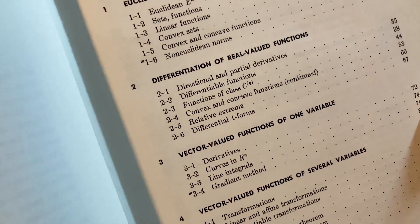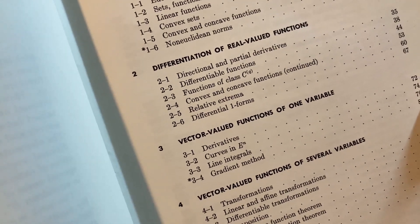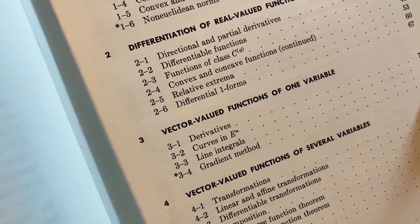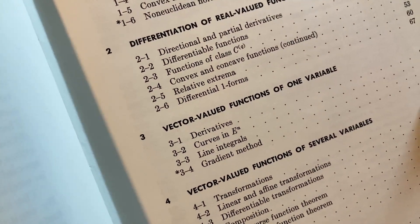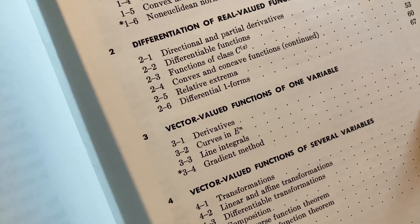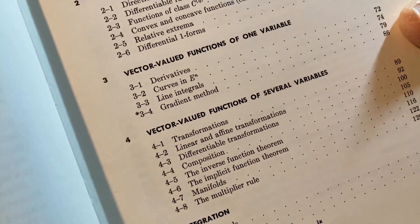This book will contain content that other books that treat multivariable calculus don't have. So you get extra content in a book like this. Also, it's a really well-written book. Not an easy book, but it's a well-written book. Vector-valued functions of one variable: derivatives, curves in En, line integrals, and the gradient method.